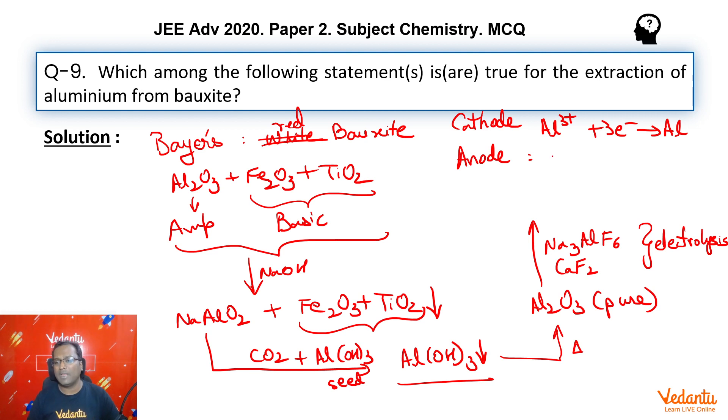At the anode we have oxide ion converting into oxygen. Remember, these anodes are made of graphite, and therefore O2 reacts with this graphite forming CO2 at the anode.